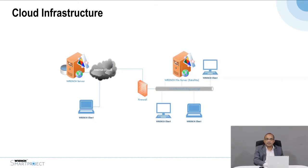REN Smart Project can be set up on a cloud infrastructure which could be either Microsoft Azure or other cloud service providers, or it can be set up on premises. The consultants and contractors can access it over the browser, and in case the connectivity at the site is poor, you could have a caching server located at the site so that files can be accessed locally for best performance.